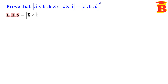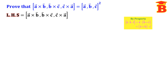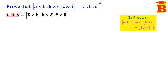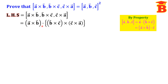First, let us take the left hand side, which is the box product of A×B, B×C, C×A. By using the property that the box product can be taken as one dot and one cross, we take the first term A×B dot, then the second term cross the third term, giving us A×B · (B×C × C×A).